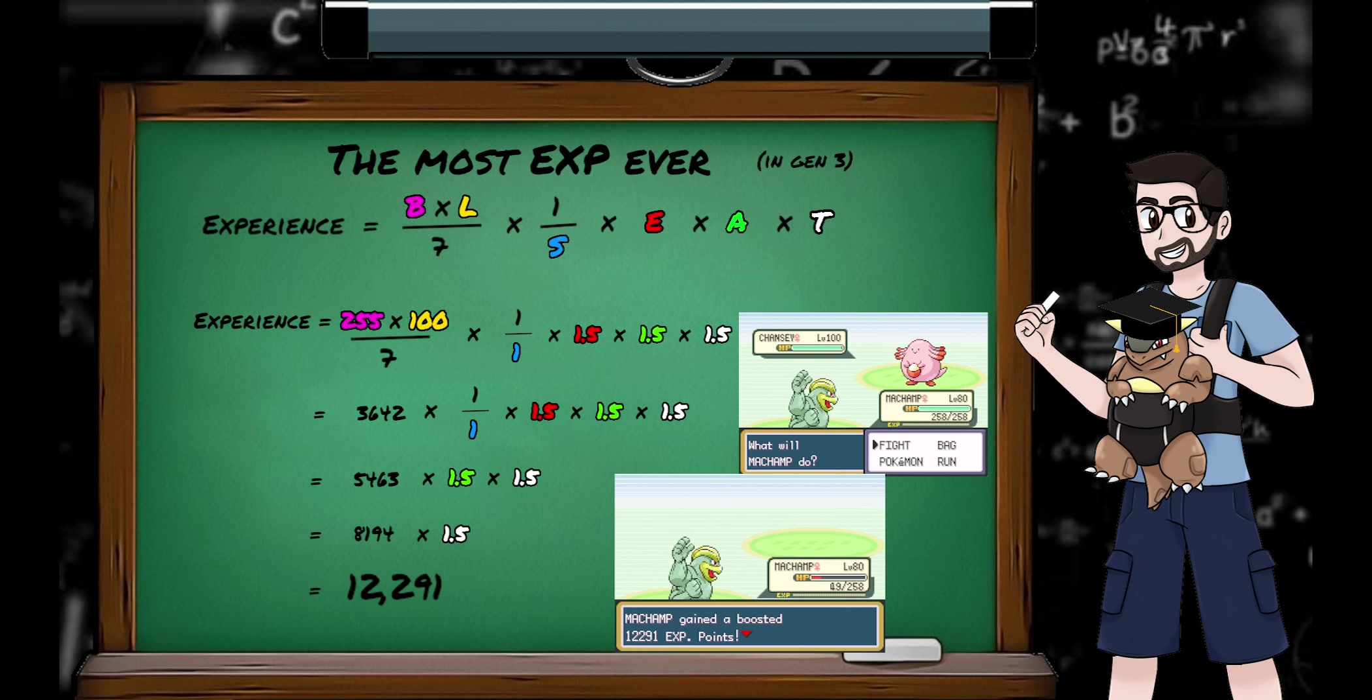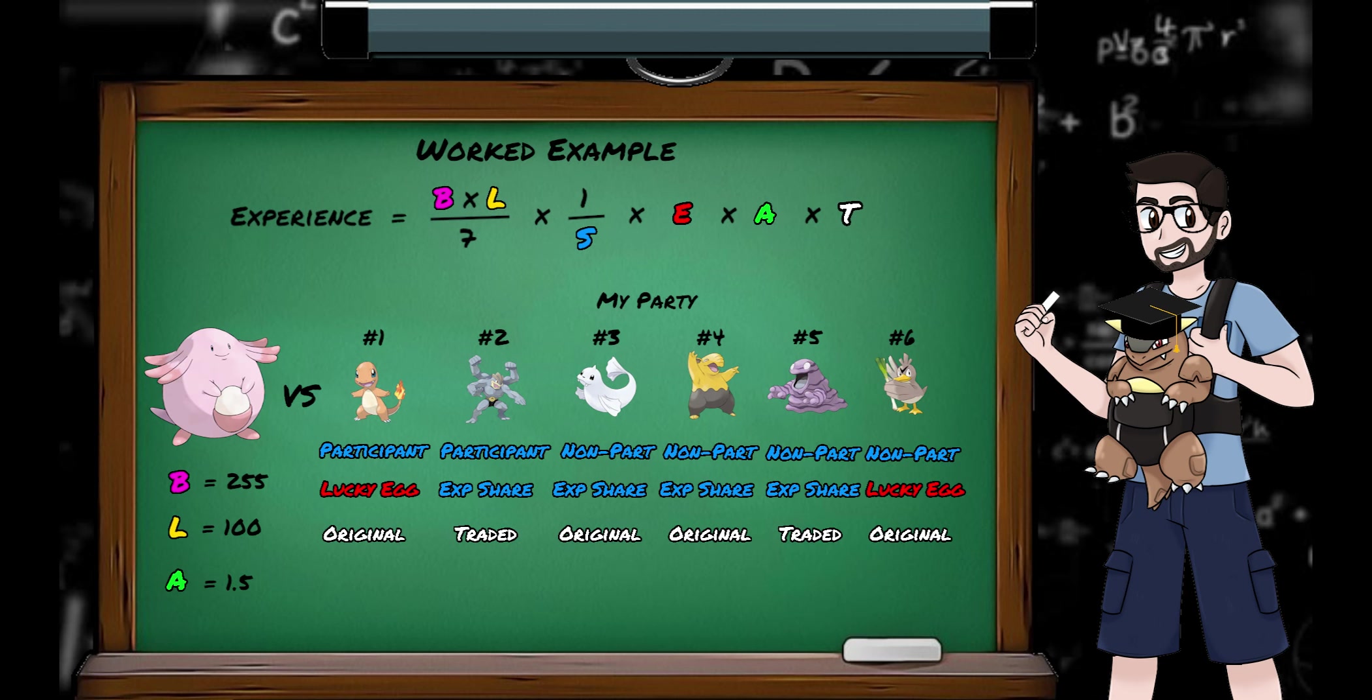So now for a more complicated worked example. We're in Gen 3 still fighting that same level 100 Chansey trainer battle, and we have a full party of 6. The first 2 of our Pokemon participate. The middle 4 are holding an XP share, the first and last ones are holding a lucky egg, and Pokemon 2 and 5 are traded.